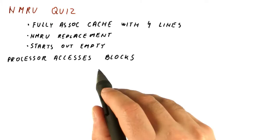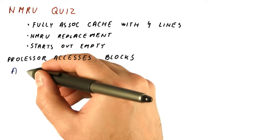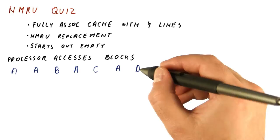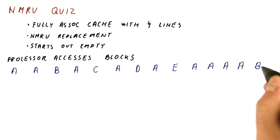And suppose that the processor accesses blocks in the following order: it accesses something in block A, then again something in block A, then something in block B, then A, then C, then A, then D, then A, then E, then A, A, A, A, and finally something in block B.